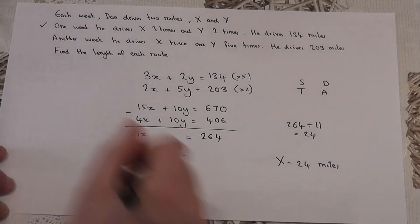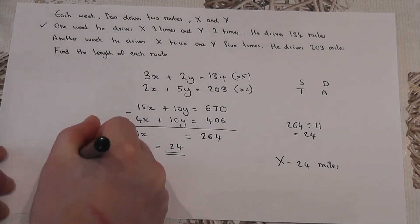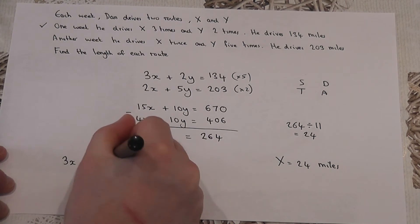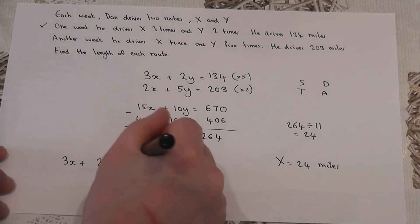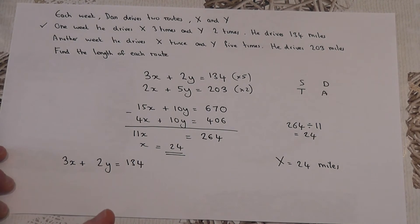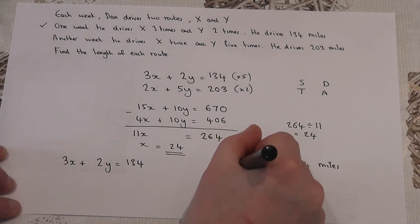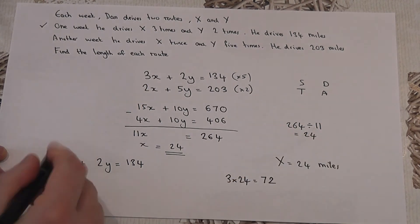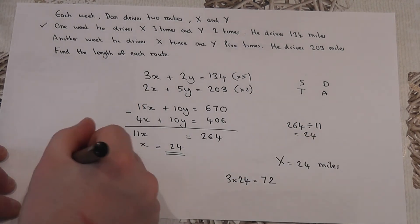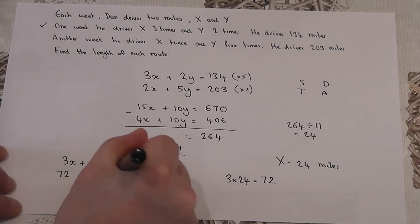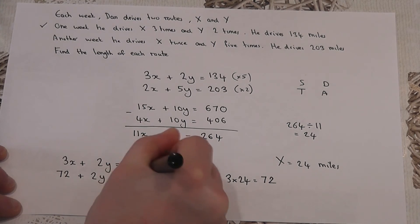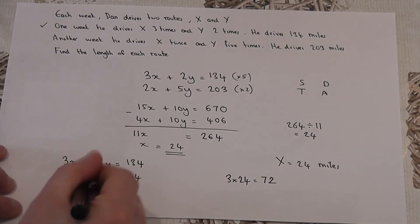But the first equation said 3 lots of x plus 2 lots of y gives a total of 134. However, I know that x is 24. So, 3 times x is 3 lots of 24, which is 72. So, 3 times x has got to be 72. So, 72 plus 2 lots of this unknown number must equal 134. So, to find this unknown number, I do 144, take away 72.